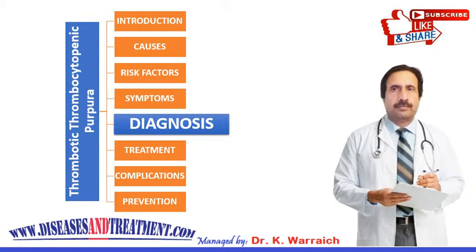Your doctor will also test your blood and examine it under a microscope to check for damage characteristic of TTP. They will check for low platelet levels, since increased clotting causes increased use of platelets, lowering their count. They will also check for high levels of bilirubin, a substance resulting from the breakdown of red blood cells.